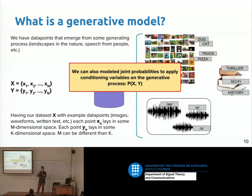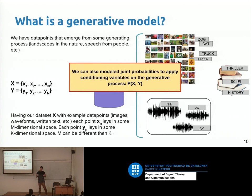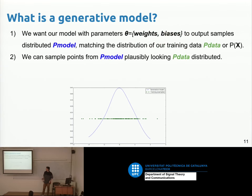This is not about not having labels. We can have labels — knowing a book is history or sci-fi — but we model the joint probability distribution. We care about the process that generated the data and mimic it with our model, so every prediction resembles the real data. If trained with images of dogs, we should get dogs in the output.